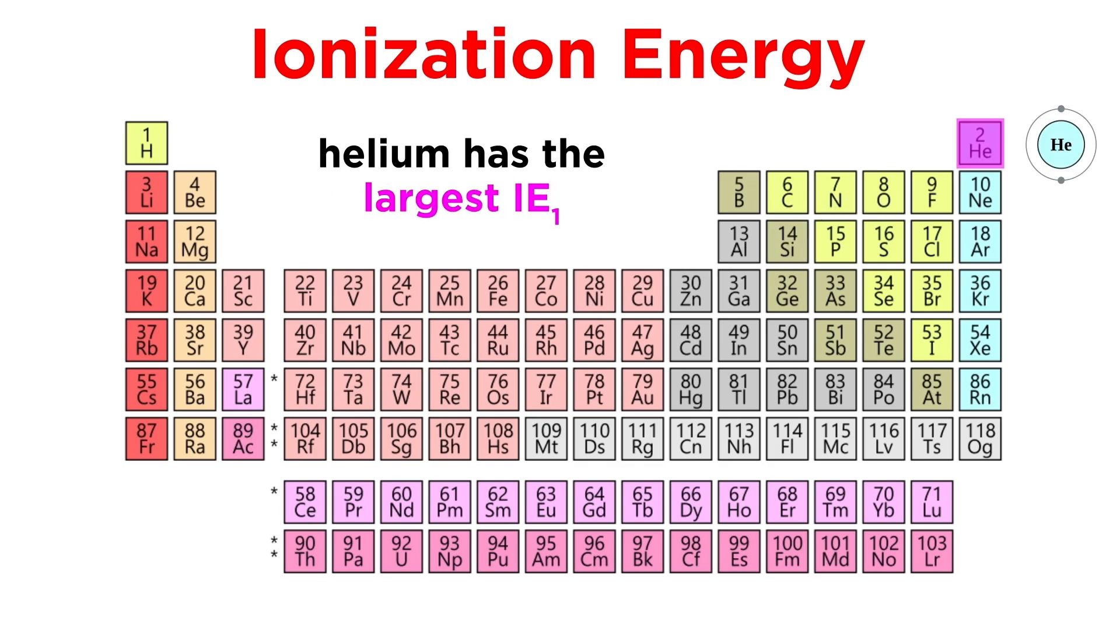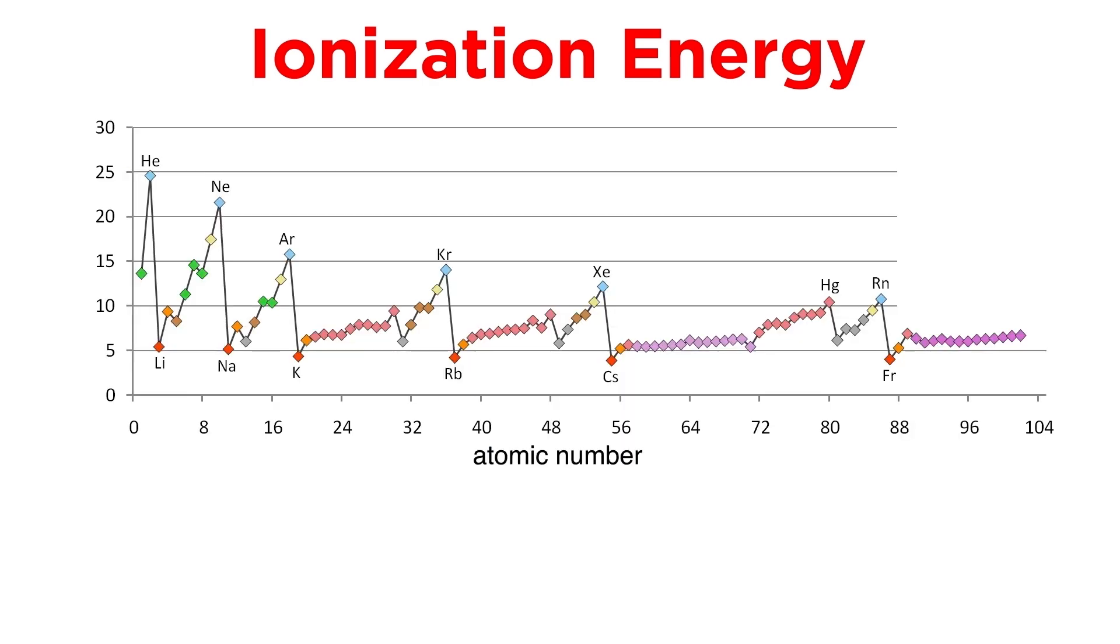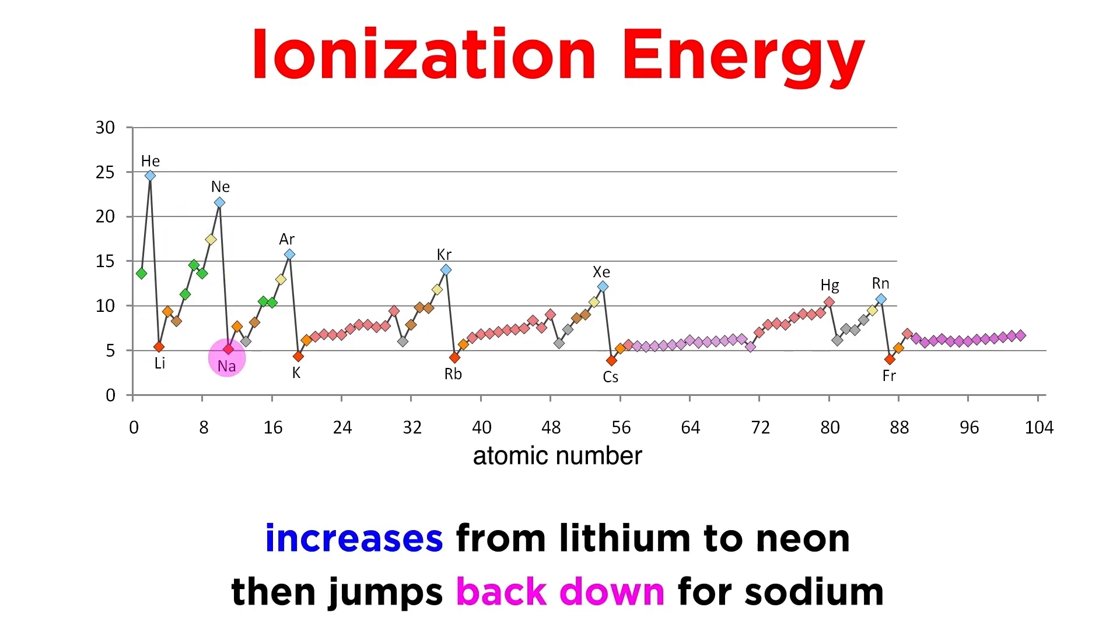That means helium is the most difficult element to ionize, with a single shell that is totally full and close to the nucleus, while francium is the easiest, with a lone electron in an outermost shell that is very far from the nucleus. Looking at this chart, we can see that in general the ionization energies will increase left to right within a period, like lithium to neon, and then jump back down again for sodium, where the next period begins.